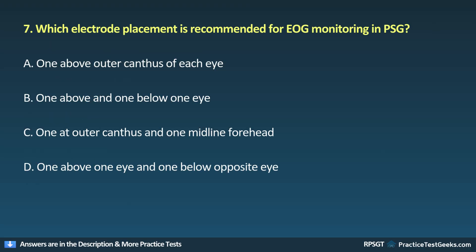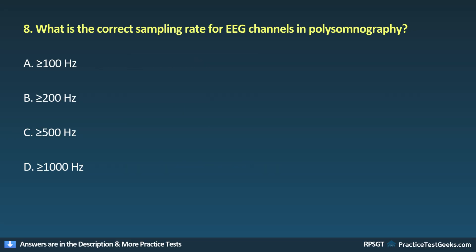Question 7: Which electrode placement is recommended for EOG monitoring in PSG? A. 1 above outer canthus of each eye, B. 1 above and 1 below 1 eye, C. 1 at outer canthus and 1 midline forehead, D. 1 above 1 eye and 1 below the opposite eye.